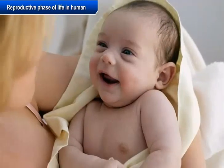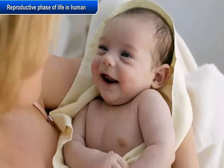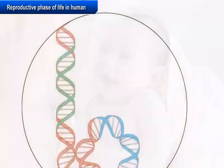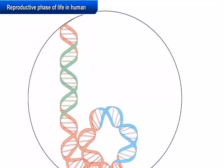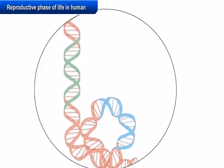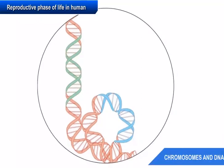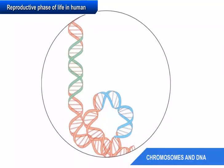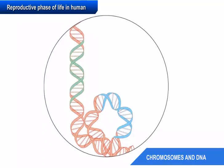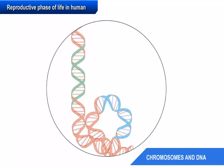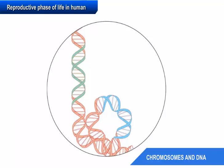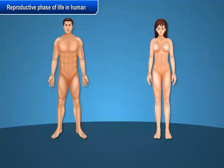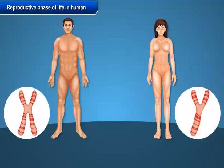Now let us learn how the sex of a baby is determined. All cells possess a nucleus, and the nucleus contains chromosomes and DNA. All human beings have 23 pairs of chromosomes in the nuclei of their cells. Out of these 23 pairs, two chromosomes are the sex chromosomes, namely X and Y.